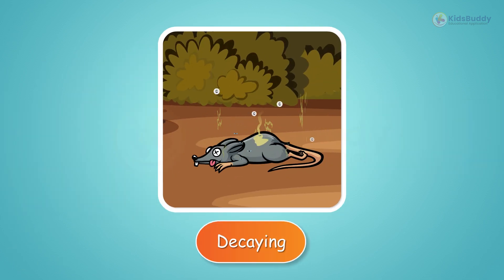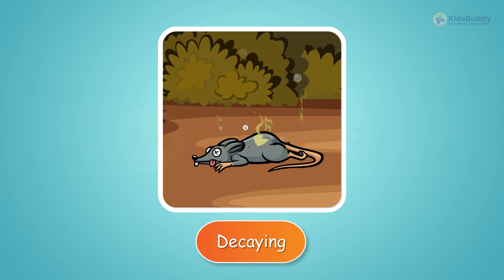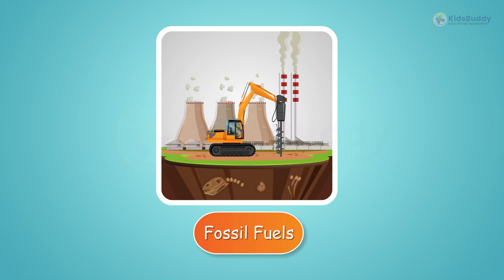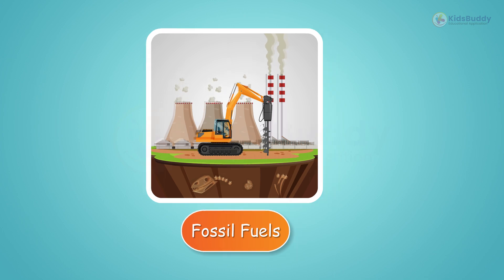Other than respiration, when humans, plants, or animals die, their remains decay and decompose and the carbon is transferred to the earth. When the remains have been around for so many years, they become fossil fuels. They are huge reservoirs of carbon.